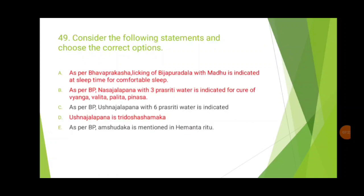As per Bhavpragash, licking of bijapura dhala with madhu is indicated at sleep time for comfortable sleep. Bhavpragash has immense importance in AIPGT nowadays, so make a note of its key points. As per Bhavpragash, nasa jalapana with three prasrithi water is indicated for cure of vyanga, palitha, valitha, and penis. Ushna jalapana with six prasrithi water is incorrect — the correct answer is eight prasrithi water. Amshutakha is mentioned in sharadarudu, not hemantarudu.